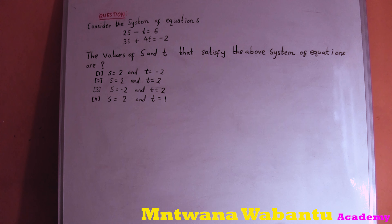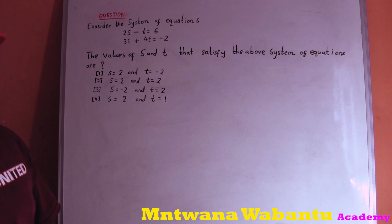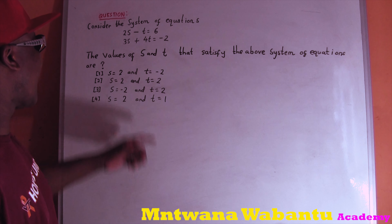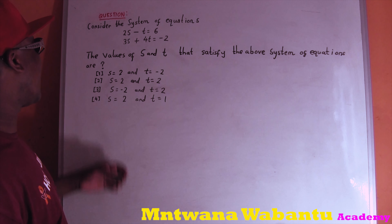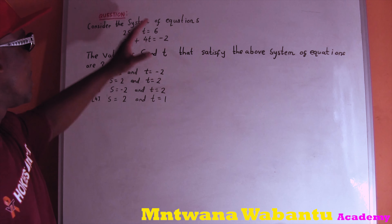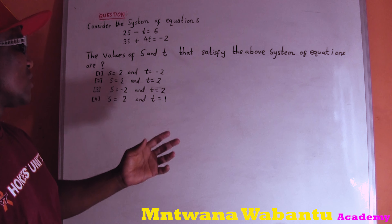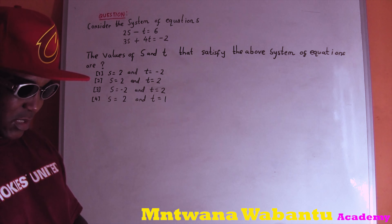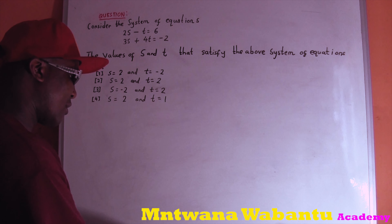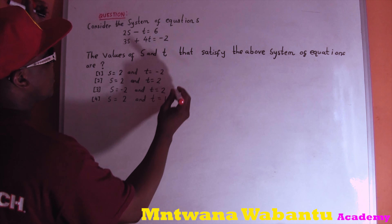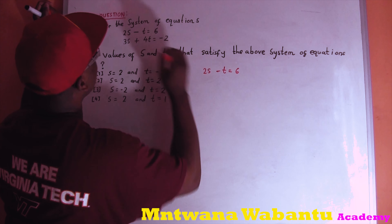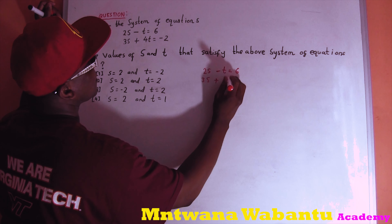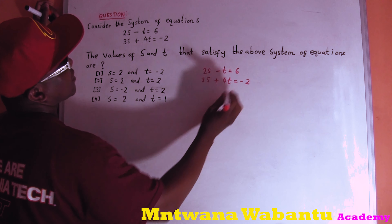Let's start solving this question. This is a simultaneous equation, which means you have two unknown letters: s and t. Consider the following system of equations for the values of s and t that satisfy the system. The two equations are: 2s minus t equals 6, and 3s plus 4t equals negative 2.